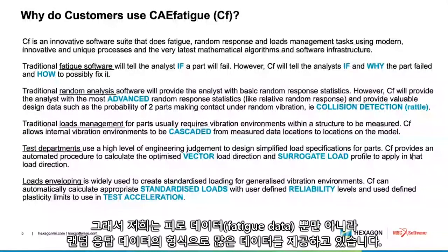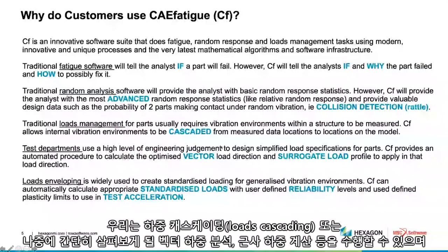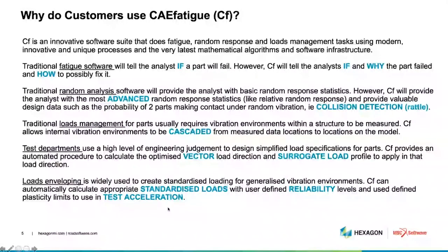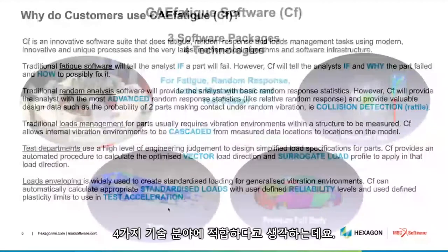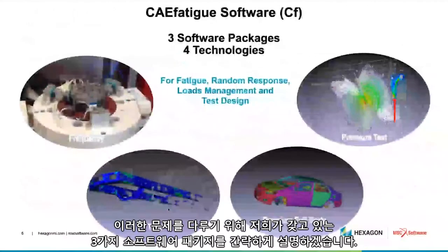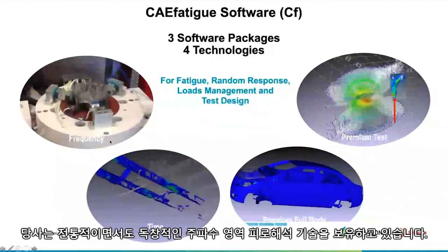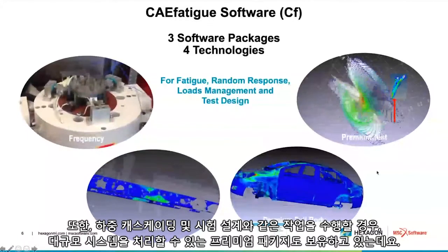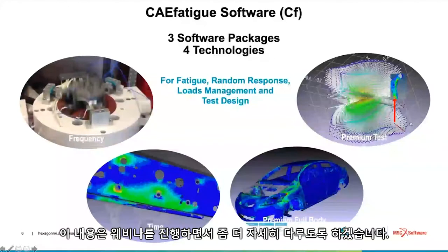We provide data in the form of fatigue data and random response data, and we can extend that to deal with advanced topics like collision detection, loads cascading, vector load analysis, and surrogate load calculations — getting us into the world of standardized loads, reliability, and test acceleration. The technology we have is quite sophisticated and fits into four technology areas, addressed by three software packages. We have our original frequency domain technology, the time domain technology, and then a premium package which addresses large systems for loads cascading and test design.